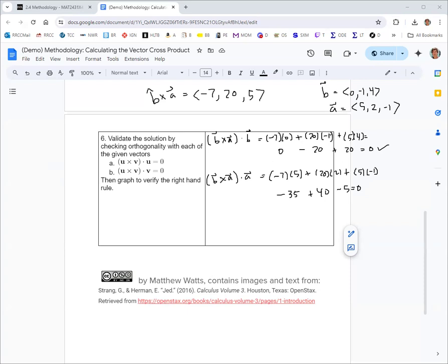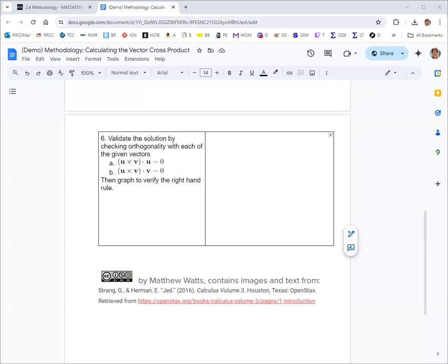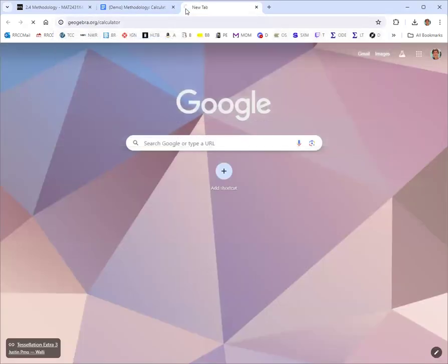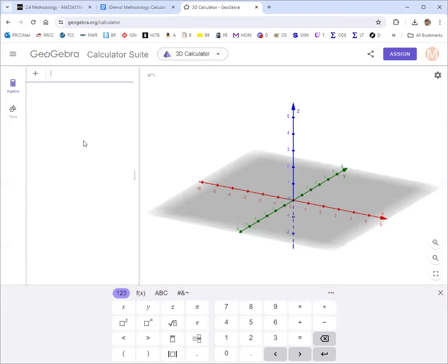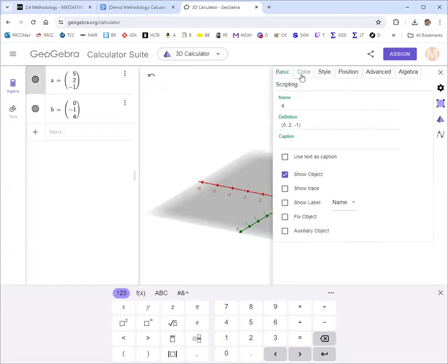So that checks out. Now we can go to GeoGebra and basically just put in these vectors. Make sure it all looks right. We'll put in a first: 5, 2, negative 1, and then b: 0, negative 1, 4. Then let's change the colors.